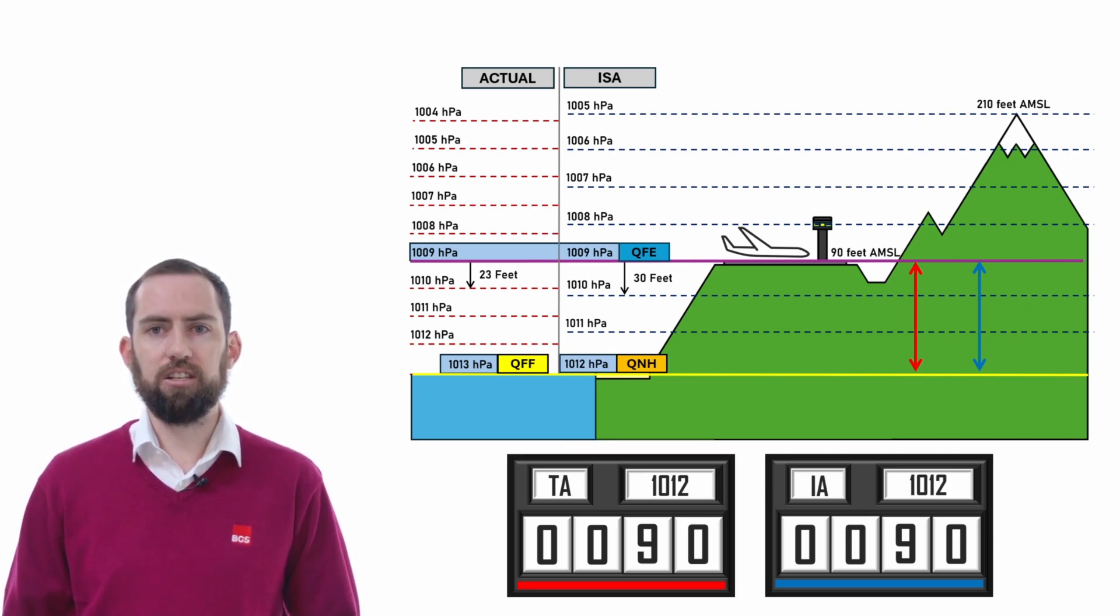At this stage, the indicated altitude and the true altitude are exactly the same because the aircraft is parked at the position where the QFE was originally measured. We don't need to consider any temperature errors here because our altimeter, which works on 30 feet per hectopascal, is in complete agreement with the QNH, which is also derived using 30 feet per hectopascal.